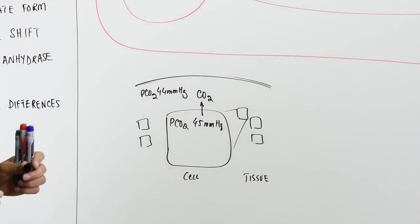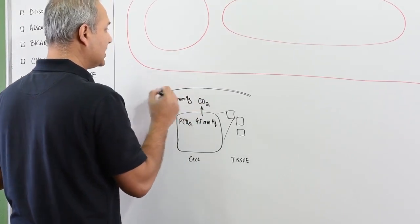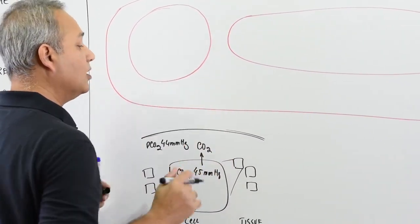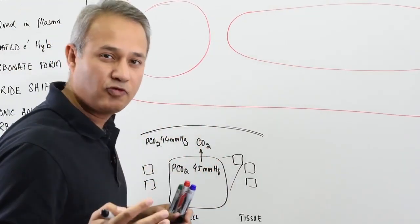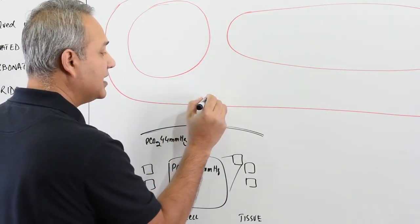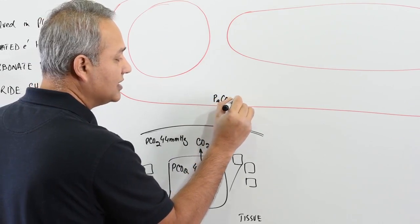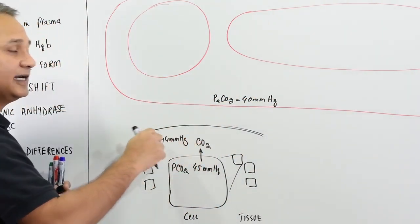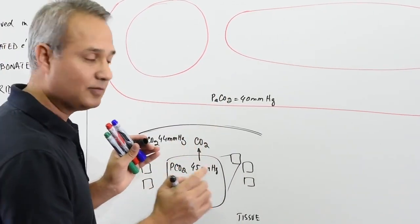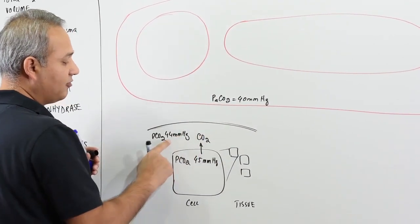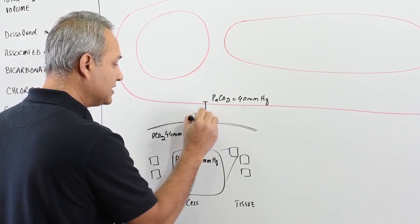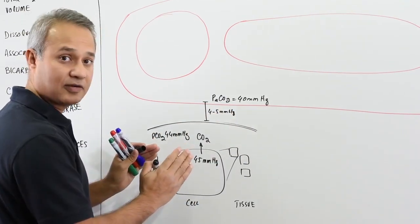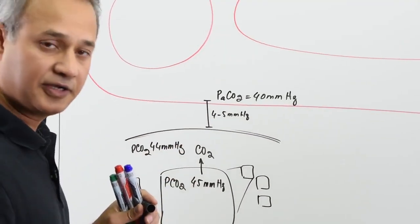Just one mmHg difference is sufficient to allow carbon dioxide to move out of the cell and diffuse into the interstitium. From the interstitium, the CO2 goes into the blood circulation — imagine this is a capillary at the venous end. The pressure gradient here is that PaCO2 in arterial blood is about 40 mmHg, so the difference is 4 to 5 mmHg, which is sufficient to move CO2 from the interstitium into the capillary.